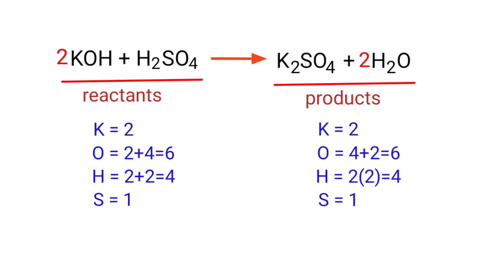The equation is now balanced. There are 2 potassium atoms, 6 oxygen atoms, 4 hydrogen atoms and 1 sulfur atom on both sides.